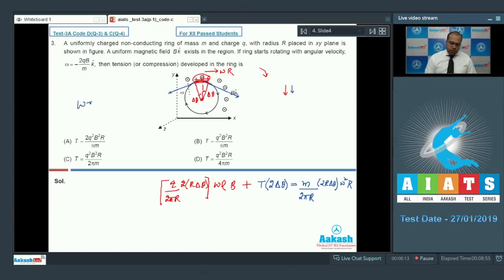So if I substitute the value of ω in this equation and solve for T, then it comes out to be Q square B square R divided by π into M. So option B is the correct answer.